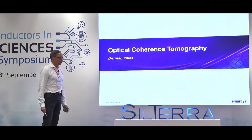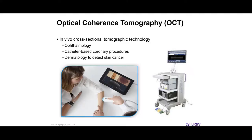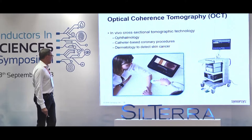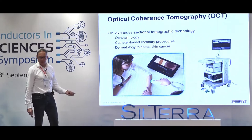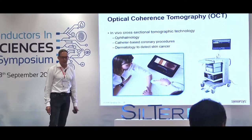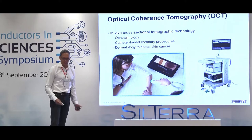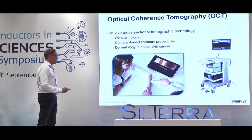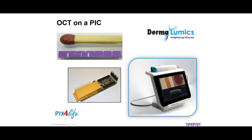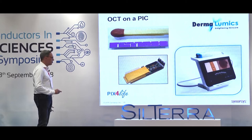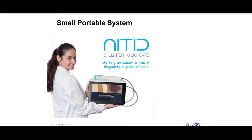One more application: optical coherence tomography, from the company Dermalumix. Optical coherence tomography is used for eye testing and dermatology — for dermatology you can use this analysis to determine skin cancer. It's basically the same as a sonogram but using light instead of sound. The equipment can be a bit bulky, but Dermalumix integrated it into a single photonic integrated circuit, packaged into a module, and then into a scanner, ending up with a nicely portable device.